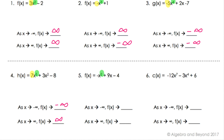Number five has second degree with a leading coefficient of negative one — even degree means both point in the same direction, and negative means they're both pointing downward towards negative infinity. The last example has odd degree seven with a negative leading coefficient, so the left side points upward towards positive infinity and the right side goes downwards towards negative infinity.